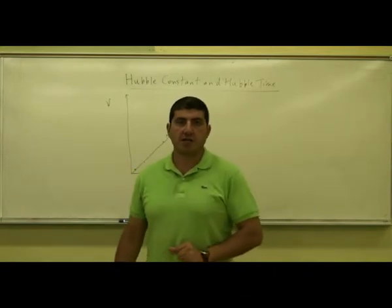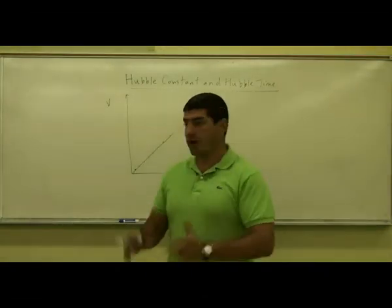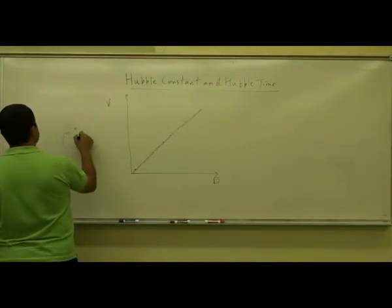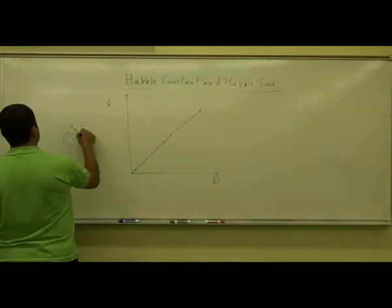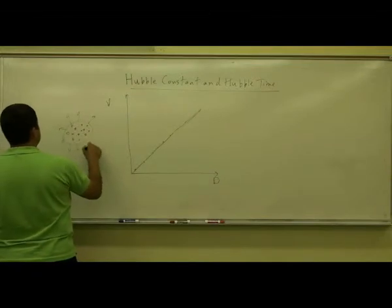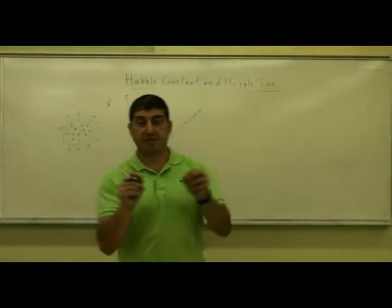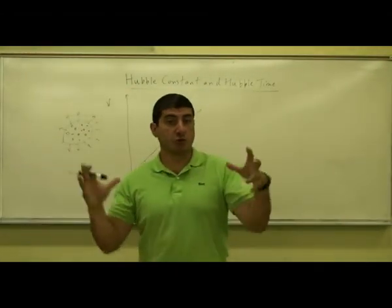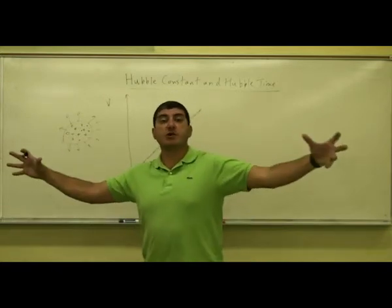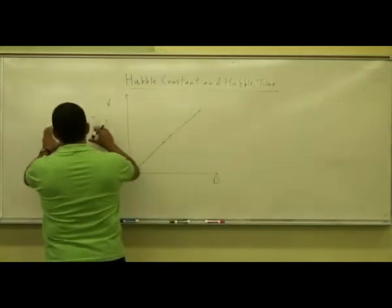The Doppler shift of galaxies. And so we call this now the button balloon model. If you take a balloon and you put a bunch of buttons on it, and then you blow up the balloon, the farther away a button is from another button, since there's more balloon between the two buttons, the buttons are going to be moving away from each other at a quicker pace.